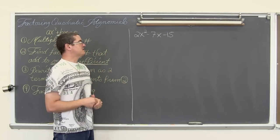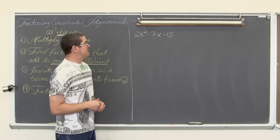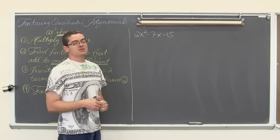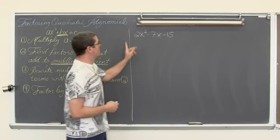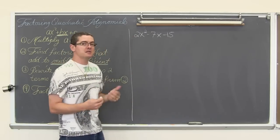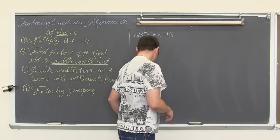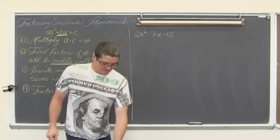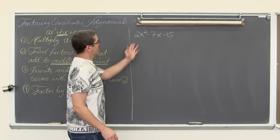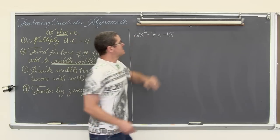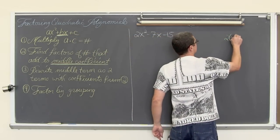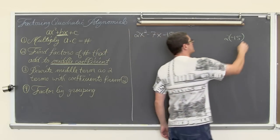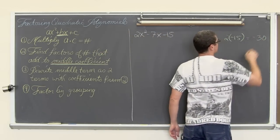So we have 2x squared minus 7x minus 15. We are going to factor this because our leading coefficient is not equal to one. We are going to take the leading coefficient and the constant and multiply them together as scratch work on the side. We have 2 times negative 15, taking the sign along with it, which equals negative 30.